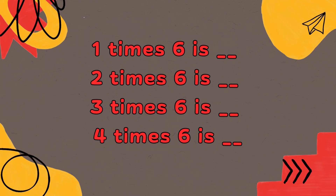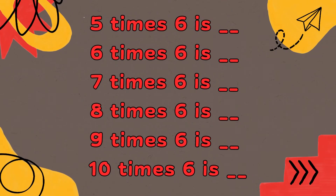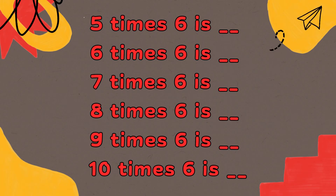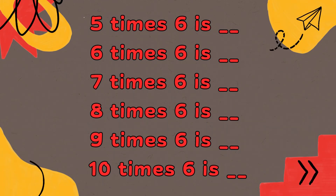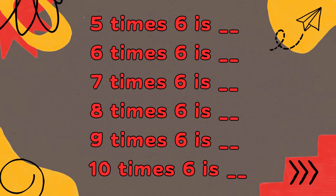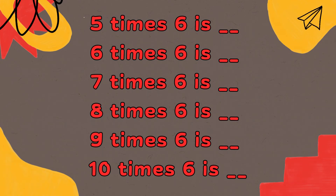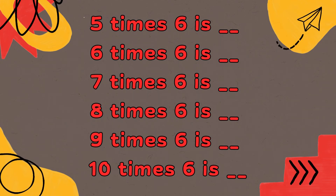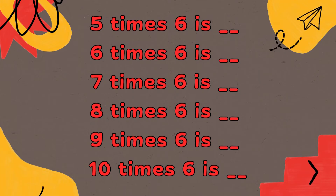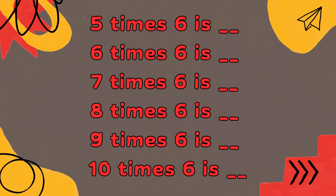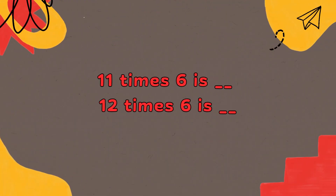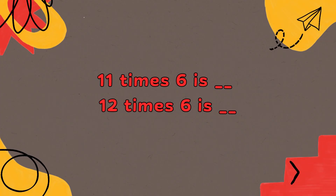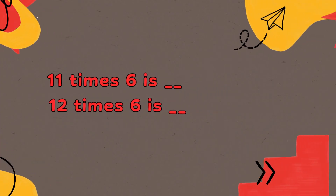1 x 6 is 6, 2 x 6 is 12, 3 x 6 is 18, 4 x 6 is 24, 5 x 6 is 30, 6 x 6 is 36, 7 x 6 is 42, 8 x 6 is 48, 9 x 6 is 54, 10 x 6 is 60, 11 x 6 is 66, 12 x 6 is 72.